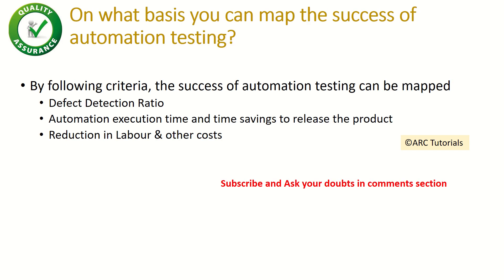The next question is: on what basis can you map the success of automation testing? This is about understanding the return on investment of your automation scripts. You can talk about defect detection ratio — the number of defects caught by your automation scripts — automation execution time, and time savings to release the product. Also discuss reduction in labor and other costs. If an automation suite can reduce five people's work to two people's work, that's a good return on investment.